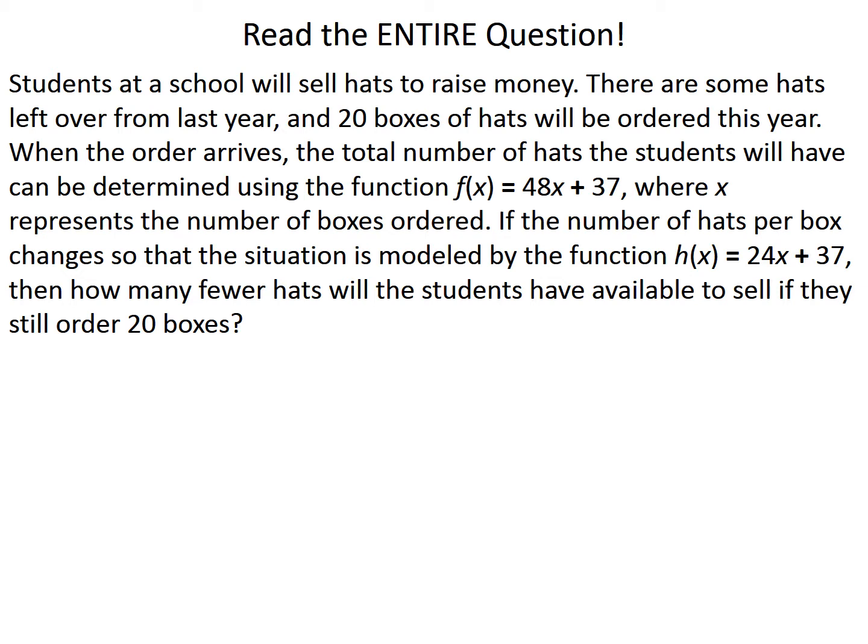Students at a school will sell hats to raise money. There are some hats left over from last year, and 20 boxes of hats will be ordered this year. When the order arrives, the total number of hats the students will have can be determined using the function f of x equals 48x plus 37, where x represents the number of boxes ordered. If the number of hats per box changes so that this situation is modeled by the function h of x equals 24x plus 37, then how many fewer hats will the students have available to sell if they still order 20 boxes?